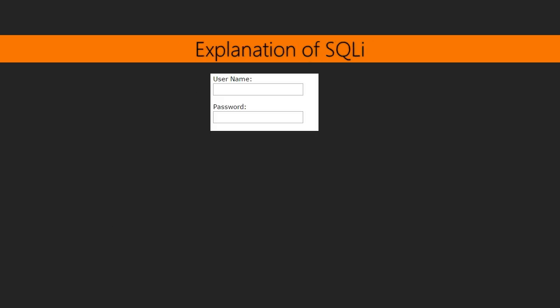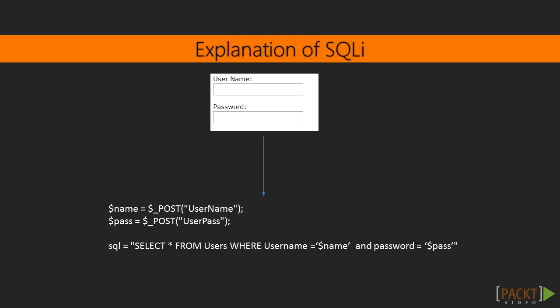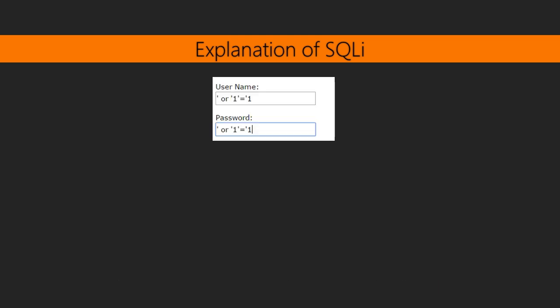Imagine we have a login form on our web application. This login form will be handled by our server-side code, that will obtain the username and password from the POST content. They will be assigned to the variables name and pass. Then these two variables will be used to dynamically construct the SQL statement. When our users provide valid usernames and passwords, like admin and superroot, the login will be successful. But what will happen if a user provides special characters and structure to his input?